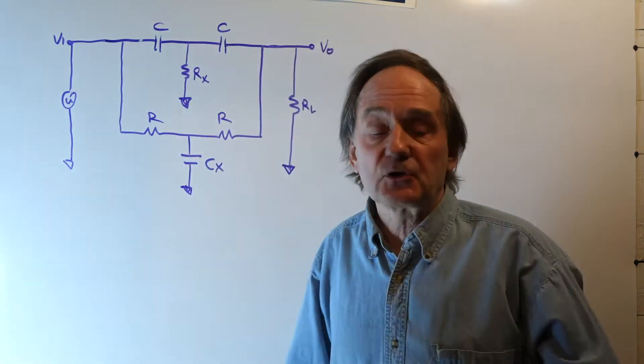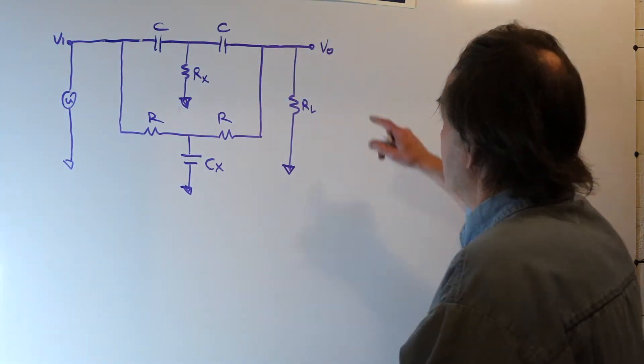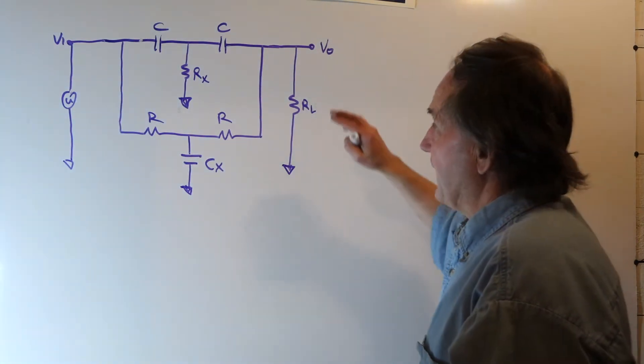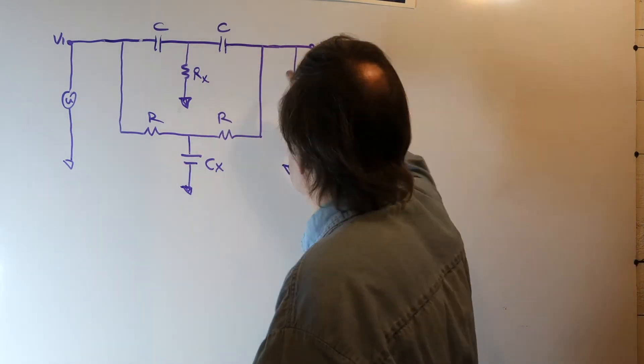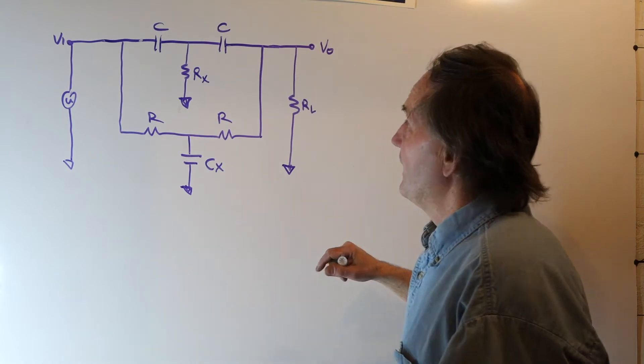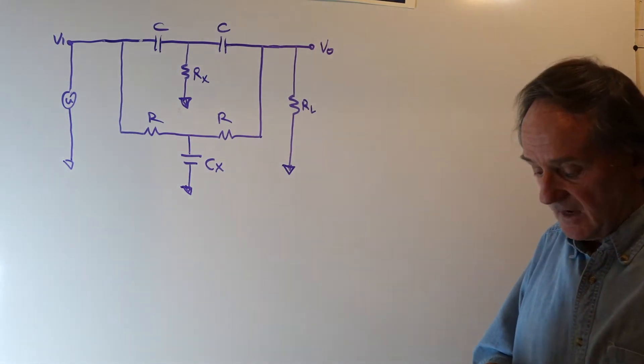This is called a notch filter. The output will go to zero at a particular frequency. What is the relationship in RX and CX to make the output zero and at what frequency does that occur?